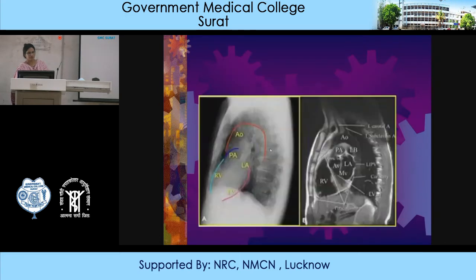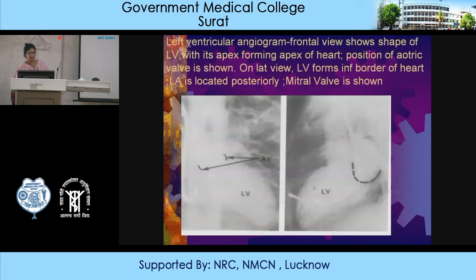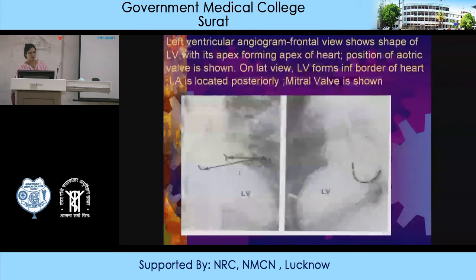CT images show the right ventricle, left ventricle, left atrium, pulmonary artery, and aorta, allowing easy delineation of these structures. On the left ventricular angiogram in the frontal view, the shape of the left ventricle is shown, the apex forms the cardiac apex, and the position of the aortic valve is demonstrated — the aorta arises from here. On the lateral view, the left ventricle forms the inferior border of the heart.